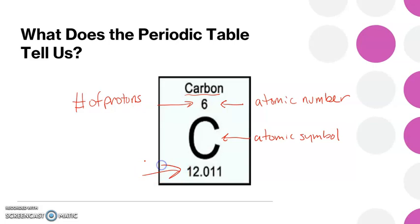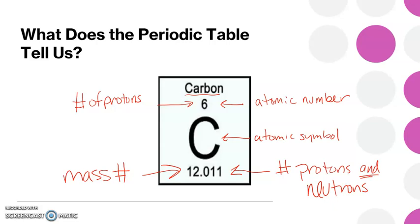And down here, this is my mass number, which tells me the number of protons and neutrons. It gives me the combination of protons and neutrons. Remember, this is where all the mass lies, not in the electrons.